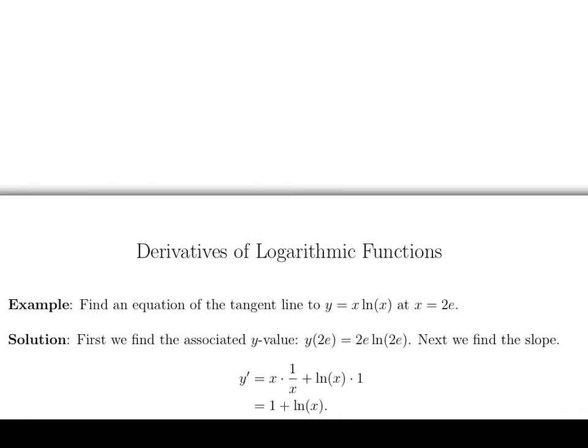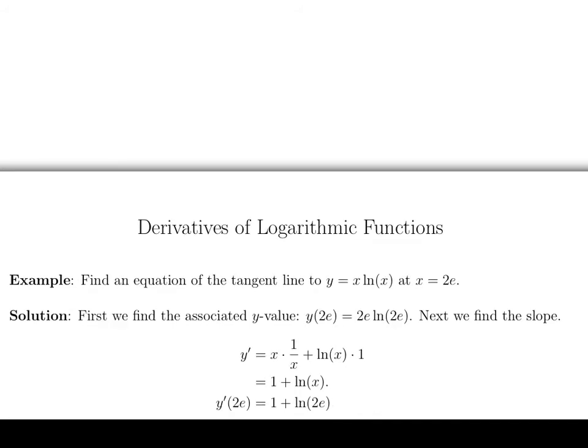And now we're going to plug in 2e into this. So we have y prime of 2e is equal to 1 plus log of 2e. And that's the slope. Anytime you compute the derivative, that gives you the slope of the tangent line.